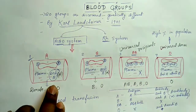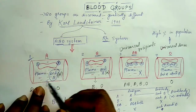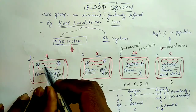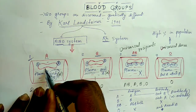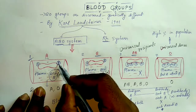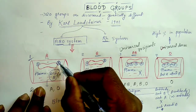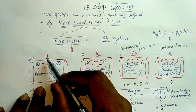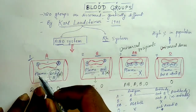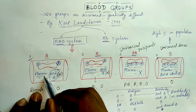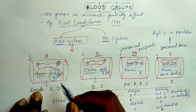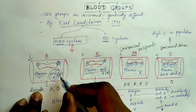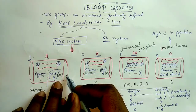First we will see about blood group A. In this person, in the blood vessels, there is RBC present and there will be presence of antigen A on the surface of the RBC. In the same person, if you look at the plasma, there will be presence of antibody known as anti-B, or it has one more name: beta antibody.